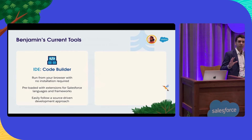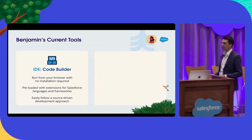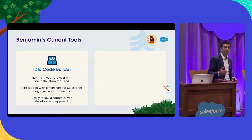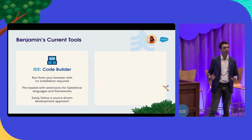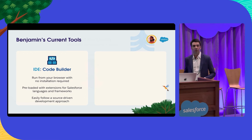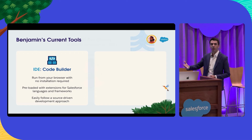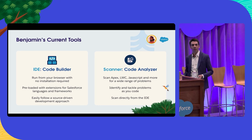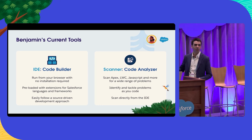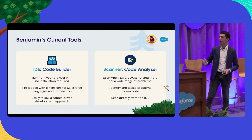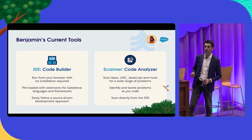Benjamin uses a couple of tools primarily. CodeBuilder is our cloud-hosted IDE that runs from his browser, preloaded with Salesforce extensions ready for the Salesforce languages and frameworks he cares about. It easily allows him to follow a source-driven development approach, connects to GitHub for source control, connects to orgs, and allows him to deploy and retrieve metadata. He also uses Salesforce Code Analyzer to ensure his code is free of problems around security, performance, code styling, and more — across Apex, LWC, and other languages.